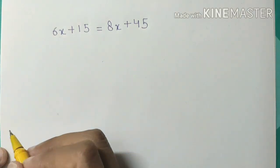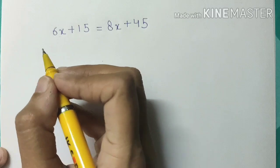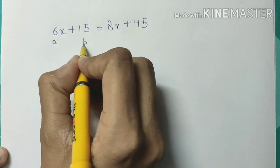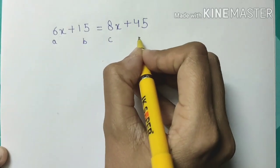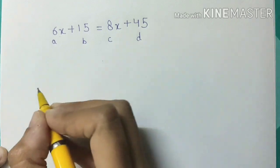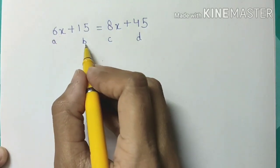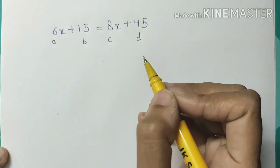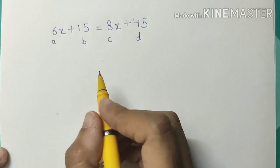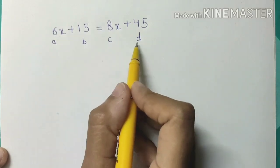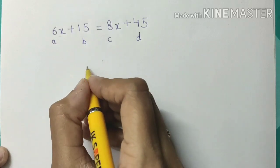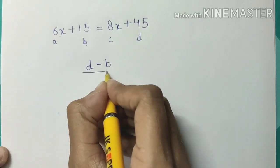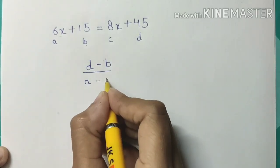First, what we'll have to do is mark A, B, C, and D. A is 6, B is 15, C is 8, and D is 45. Now we will put the values of A, B, C, D into a simple formula which is (D minus B) upon (A minus C).